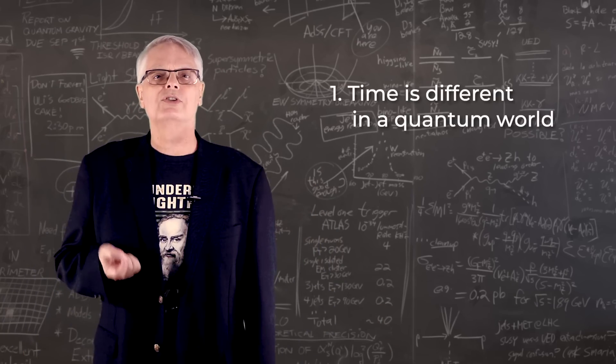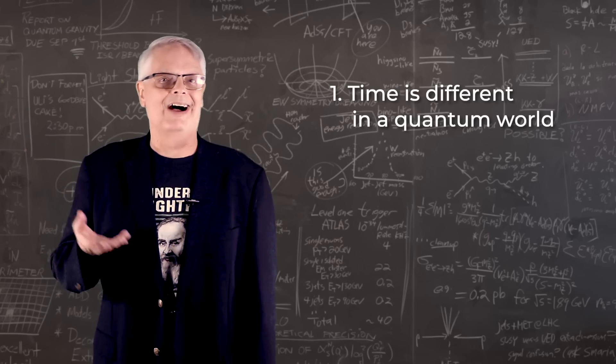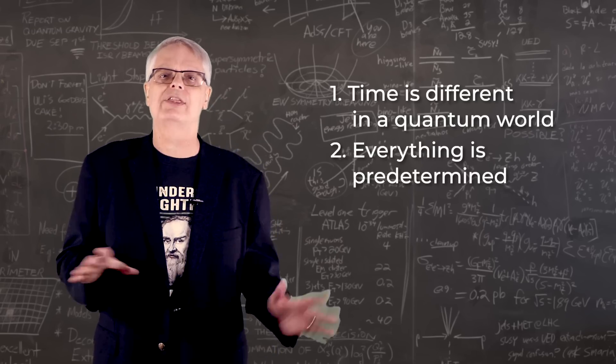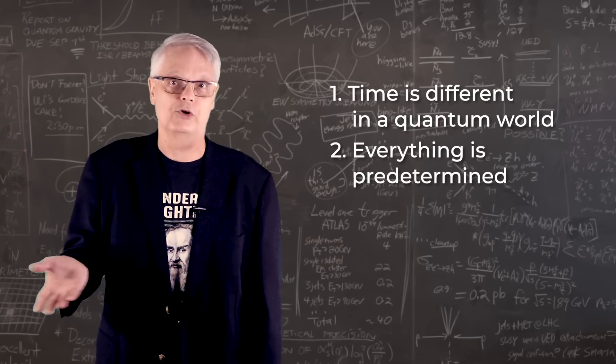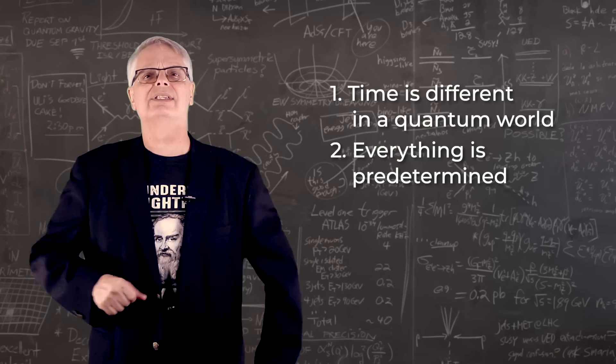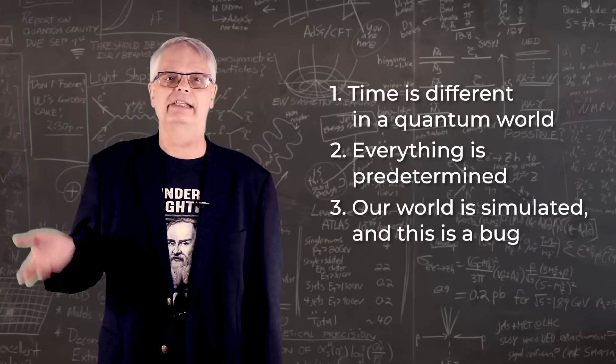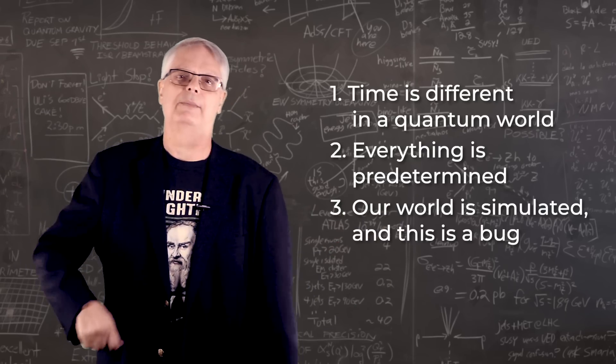Could it be that the universe at the quantum level doesn't understand time in the way that we do? Is the universe super deterministic, which means that everything we do, past and future, is predetermined? Or, getting even sillier, maybe the delayed quantum eraser experiment is just a bug fix in our simulated universe, which is kind of like the matrix.